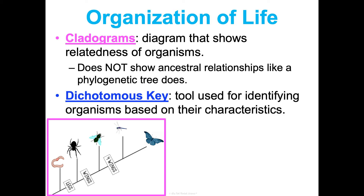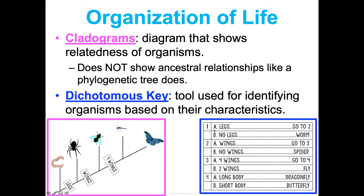Another tool is a dichotomous key — a tool used for identifying organisms based on their characteristics. You take an organism and run it through a chart. For example, with a fly: step one asks does it have legs or no legs — it has legs, so go to step two. Step two asks does it have wings or no wings — it does have wings, so go to step three. Step three asks does it have four wings or two wings — it has two wings, so this must be a fly. We're going to practice this by categorizing some alien monsters in our packets.